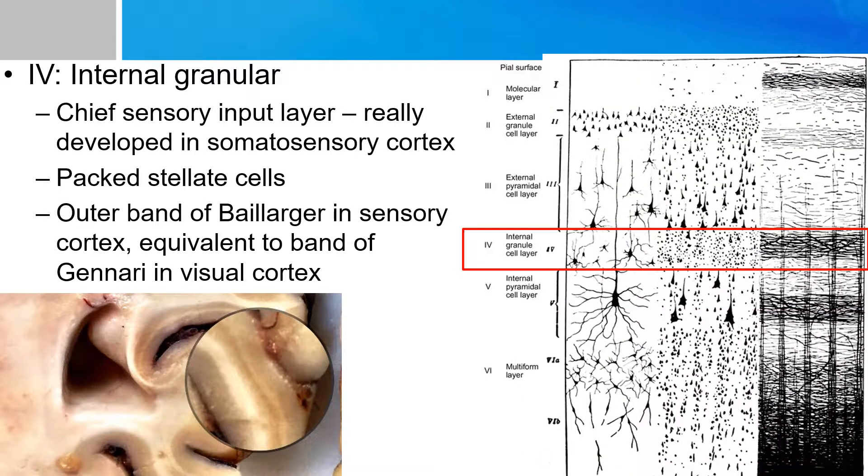Layer four receives the chief sensory input from the outside world and therefore is really well developed in the somatosensory cortex. It contains the cell types specialized in receiving information which is the stellate cells. And in the case of the primary somatosensory cortex, the sensory information is transmitted up from the spinal thalamic tract to the VPL nucleus of thalamus. And these thalamocortical projections then from the thalamus goes to layer four of the gray matter and to form a dense horizontal plexus of myelinated fibers. And this band is called the outer band of Baillarger as illustrated by the red arrow.